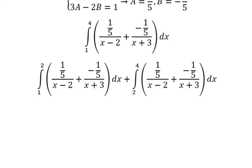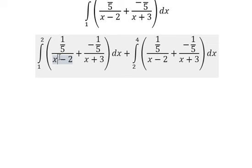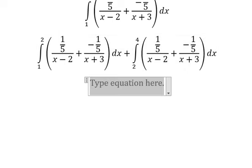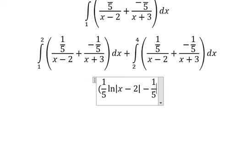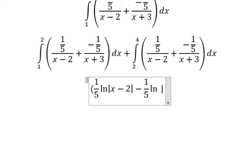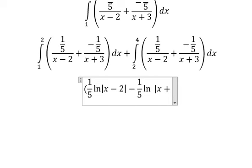So the integration of this one is 1 over 5 times the natural log of the absolute value of x minus 2, plus negative 1 over 5 times the natural log of the absolute value of x plus 3.